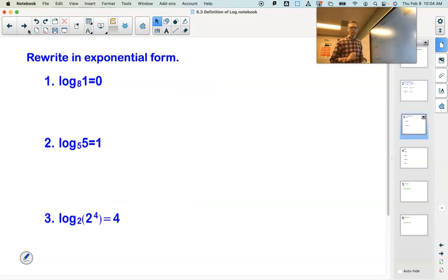Now let's take a logarithm and rewrite it as the exponential. Remember that triangle thing again? Here's the base. Log base 8 of 1 equals 0. 8 to the 0, that's the exponent, equals 1. 8 to the 0 equals 1.